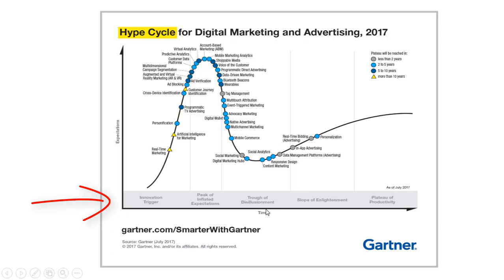The other three middle phases are the peak of inflated expectations, trough of disillusionment, and slope of enlightenment. The duration that a technology may take to progress from one phase to another varies by technology and its adoption by the market. Also, not all technologies may go through all five phases and may die in the middle before they reach full maturity. On the other hand, some technologies may go through all five phases quickly, indicating their maturity and adoption in a small period of time.